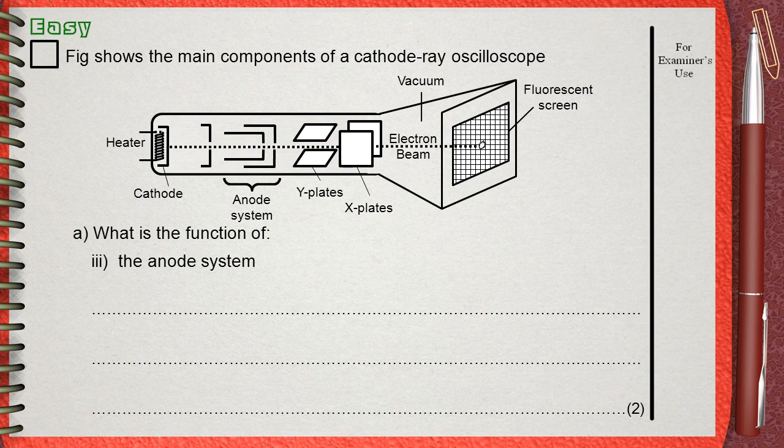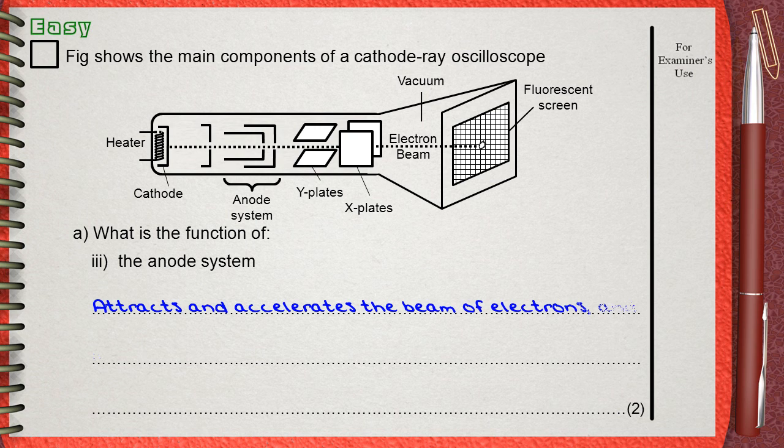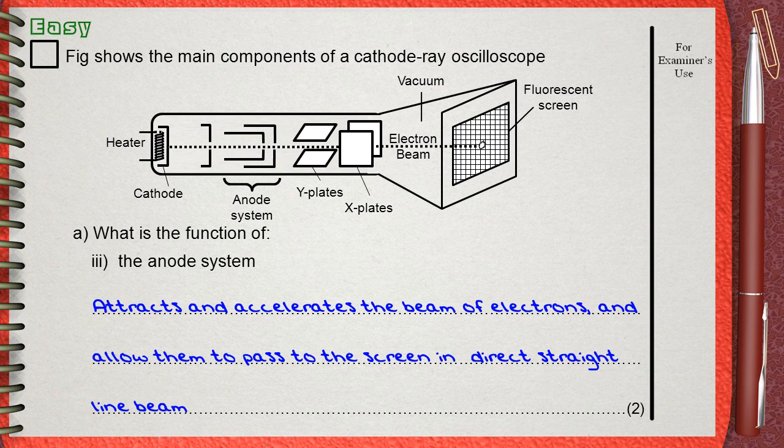This positive potential or positive charge attracts and accelerates the electrons that are released from the cathode. Also, they are hollow to allow these electrons to move through the anode and directing them towards the screen. So we can say that the anode system attracts and accelerates the beam of electrons and allow them to pass to the screen in direct straight line beam.